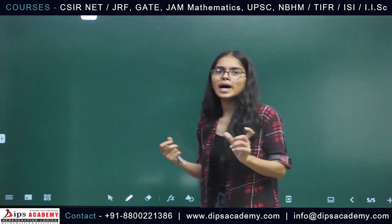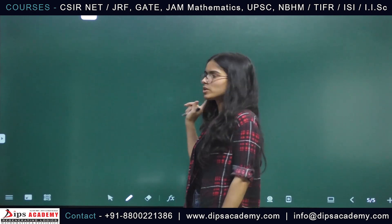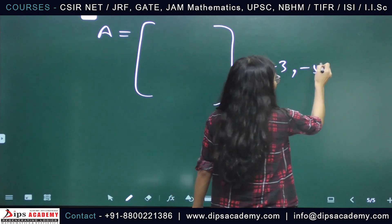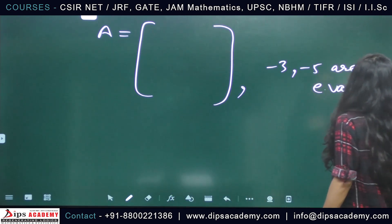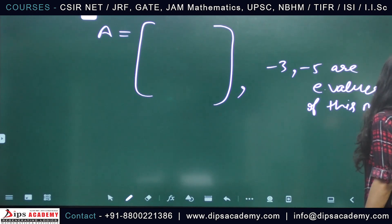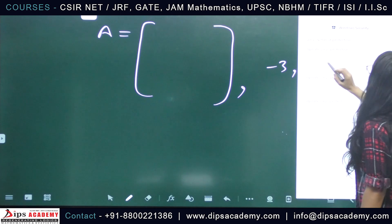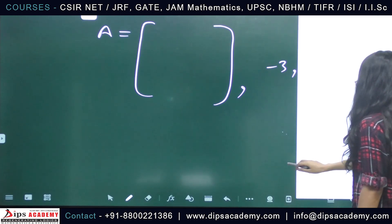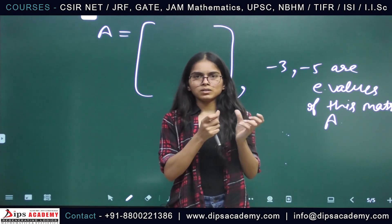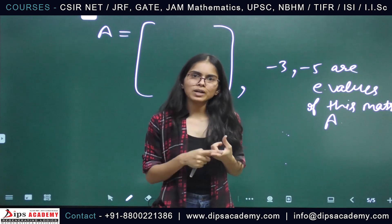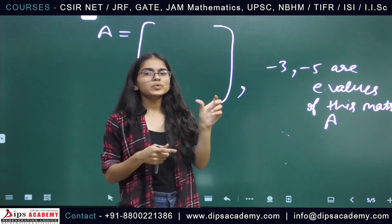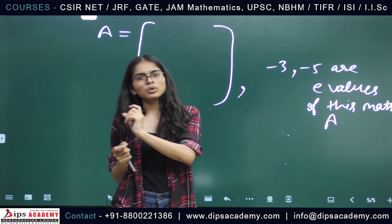From the two given solutions we identify that -3 and -5 are eigenvalues of matrix A. The general solution is y = c1*x1 + c2*x2 + c3*x3, where xi = e^{λi·t} · vi. We now need to find the third eigenvalue λ3.